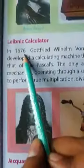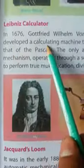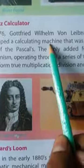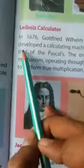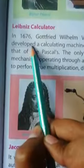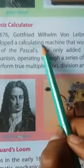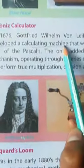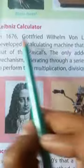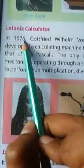In 1676, Gottfried Wilhelm von Leibniz, a German mathematician, developed a calculating machine. Mathematician means गणितज्ञ. Developed means विकसित या विकास करना. Calculating machine means गणना करने वाली मशीन.